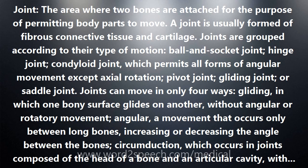Joints are grouped according to their type of motion: ball and socket joint, hinge joint, condyloid joint — which permits all forms of angular movement except axial rotation — pivot joint, gliding joint, or saddle joint.